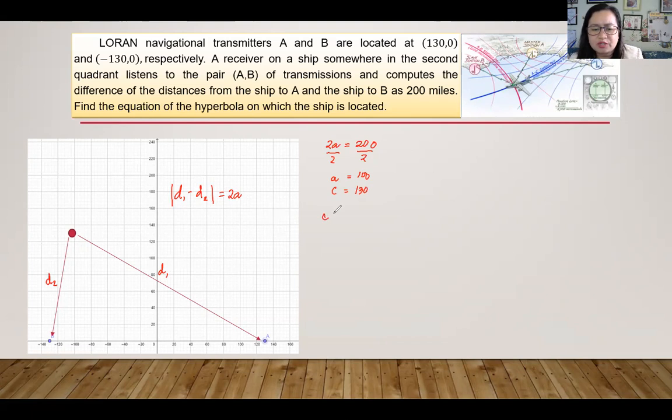Now in order to get B, we have to equate C squared is equal to A squared plus B squared, then substitute 130 raised to the second power equals to 100 squared plus B squared. We have to find the value of B in order to write the equation of the given parabola.